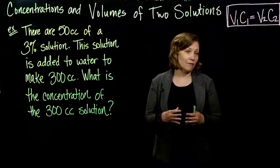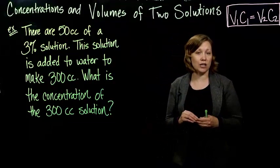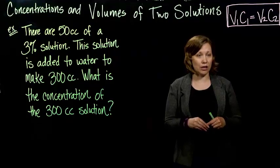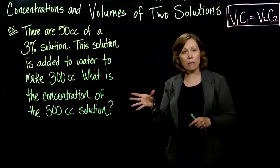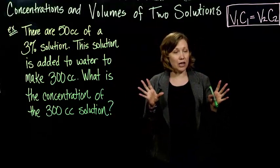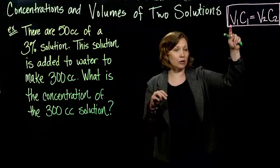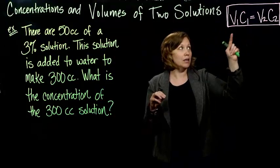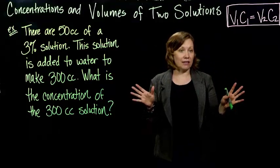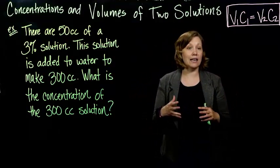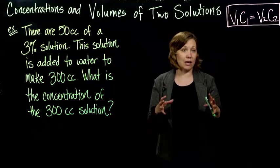And they want us to figure out what is the concentration of the 300 cc solution. So again, we can go back to this formula. That same idea, the amount doesn't change, so if we multiply the percent times the volume, concentrate times the volume before and after the dilution, we should still get the same amount. We haven't added any more of the actual substance.